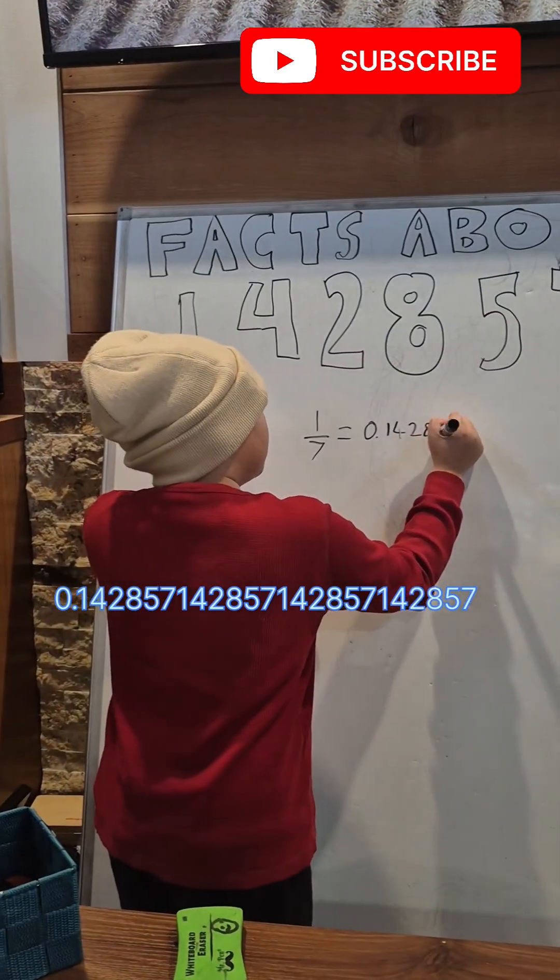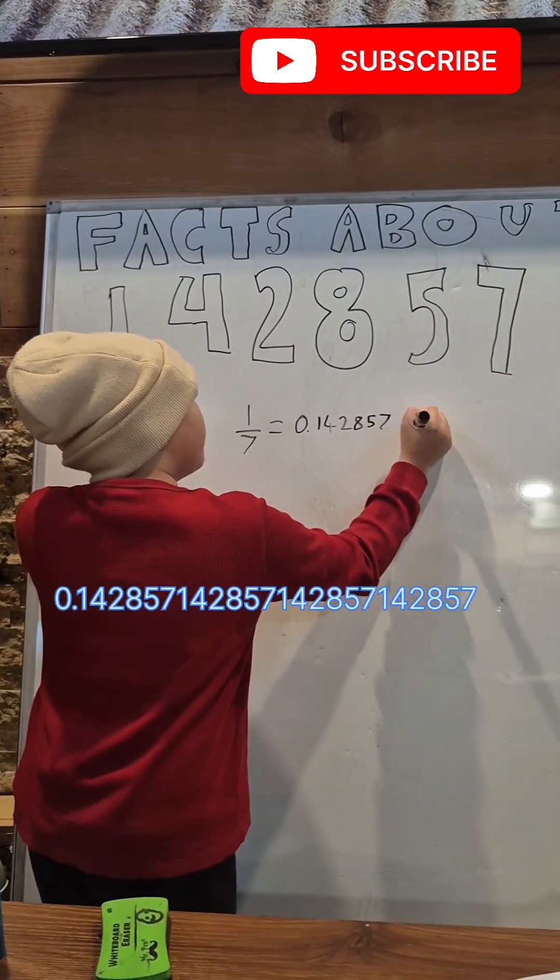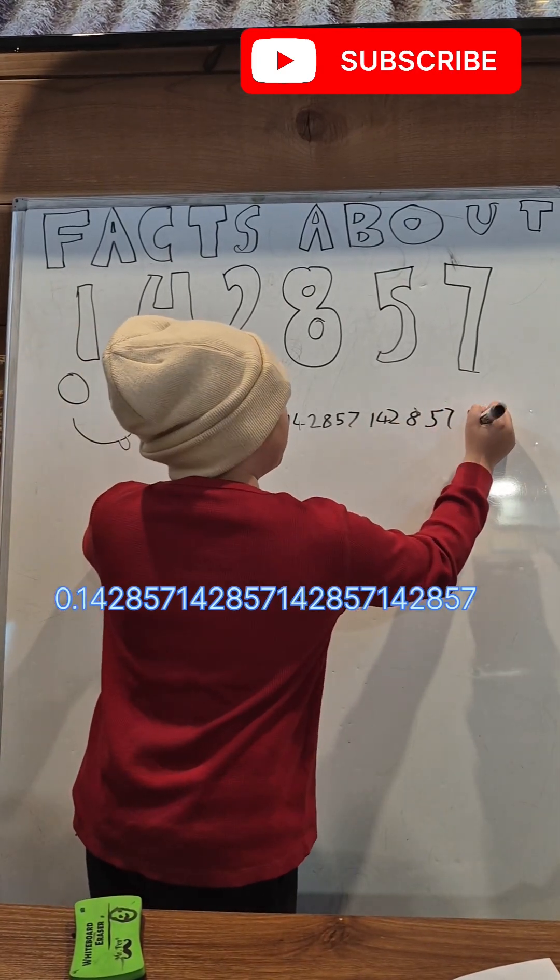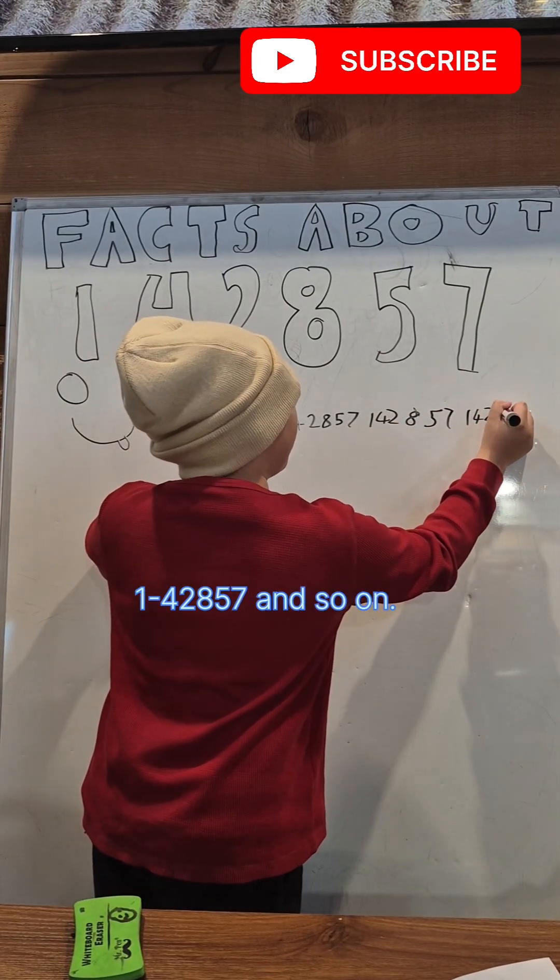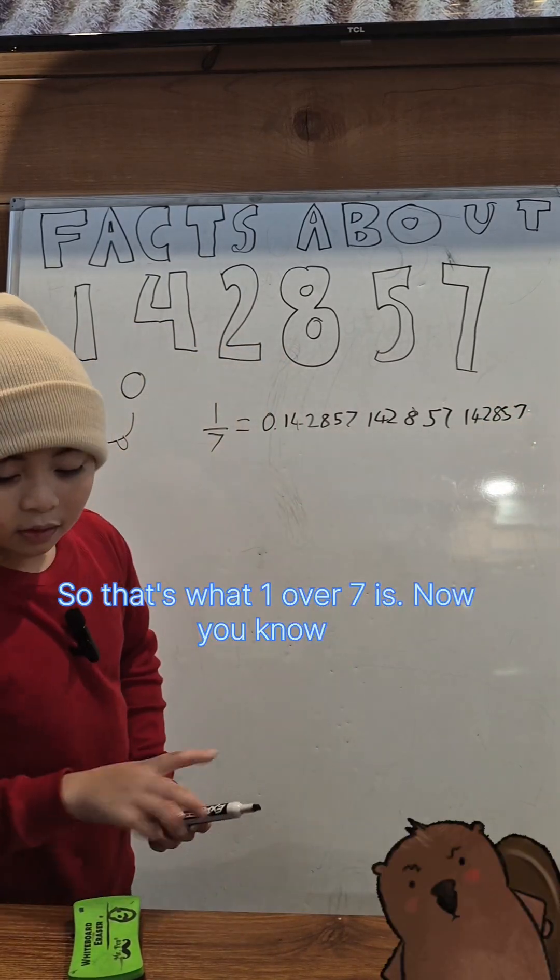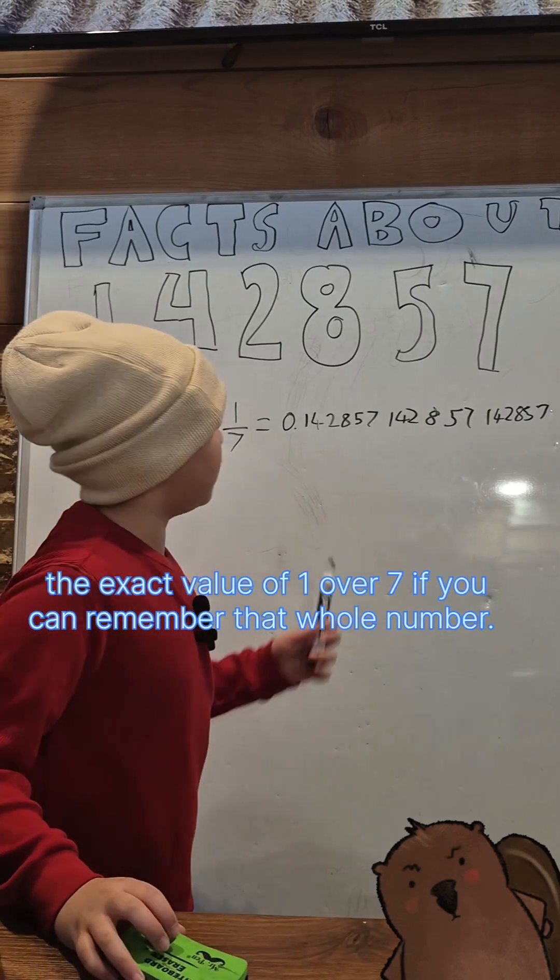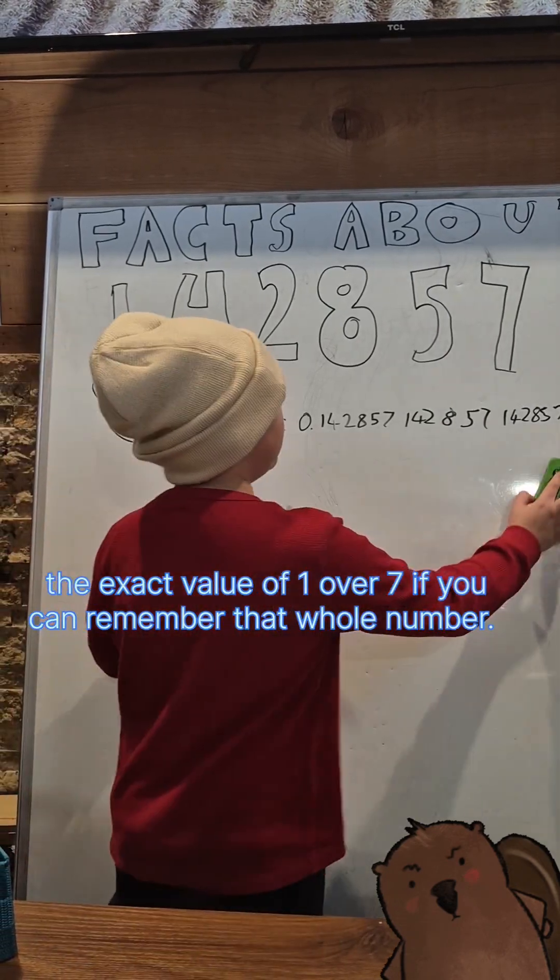42857, 142857, 142857, and so on. So that's what 1 over 7 is. Now you know the exact value of 1 over 7 if you can